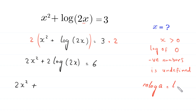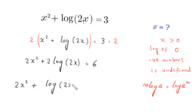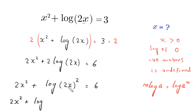Next, we apply the log property: m times log of a equals log of a to the power m. So 2 times log of 2x becomes log of (2x) squared. Expanding (2x) squared gives 4x squared, so the equation becomes 2x squared plus log of 4x squared equals 6.